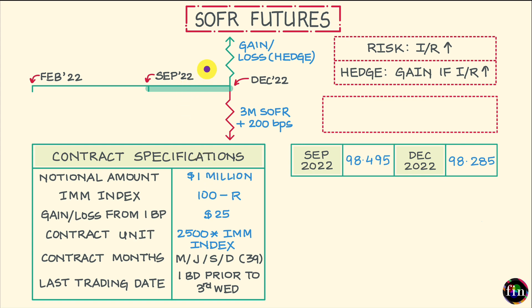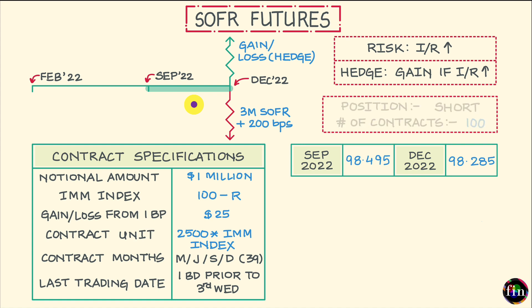Also, the size of my borrowing is $100 million and the notional amount for one contract is $1 million. This tells me that the number of contracts I need is 100. So my hedge position is a short position in September 2022 three-month SOFR futures with 100 contracts required.